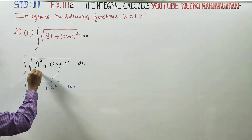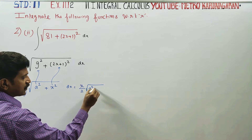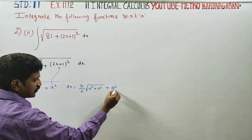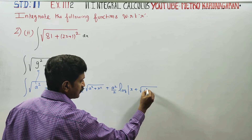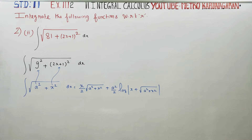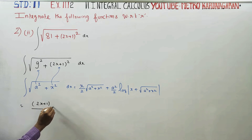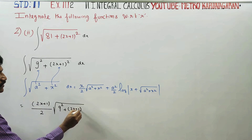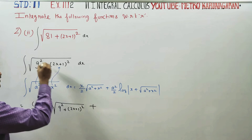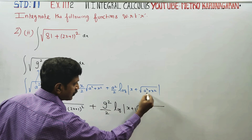Here x is (2x+1) and a is 9. The formula is: x by 2 times square root of a square plus x square, plus a square by 2 times logarithm of x plus square root of a square plus x square, plus c. This is the formula for square root of a square plus x square. So we have 9 square plus (2x+1) whole square, plus a square by 2, that is 9 square by 2, times logarithm of x plus square root of a square plus x square.